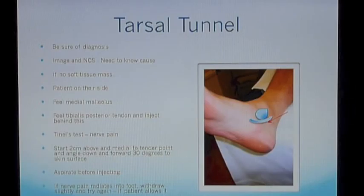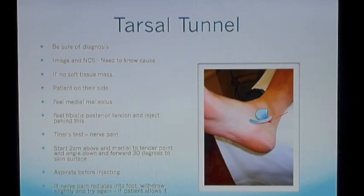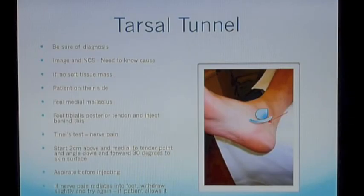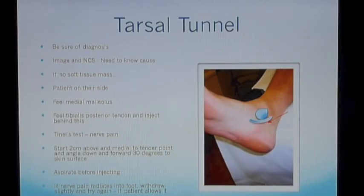The tarsal tunnel is something that in theory could be injected but is very rarely done and I wouldn't recommend it in primary care. You need to be particularly sure about your diagnosis and know what's causing the tarsal tunnel syndrome. Nerve conduction studies will show if there's compression of the nerve, and imaging such as an MRI scan will tell you if there's a soft tissue mass that needs to be treated. The patient needs to be on their side. Feel the medial malleolus, feel the tibialis posterior tendon below this. Perform a Tinel's test by tapping on the nerve to locate where the nerve pain appears to be arising from. Start from proximally and above, aiming downwards about 30 degrees to the skin surface along the line of the nerve, and aspirate before injecting. If the patient feels pain, you may be in the nerve — withdraw slightly and give another test injection.